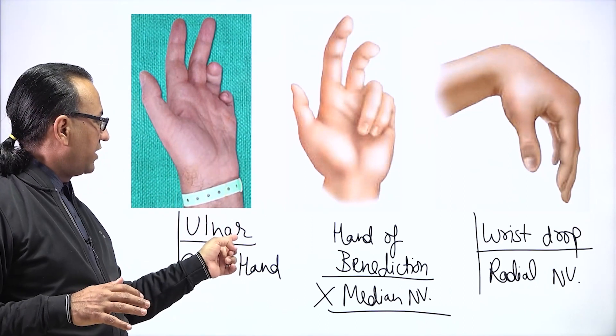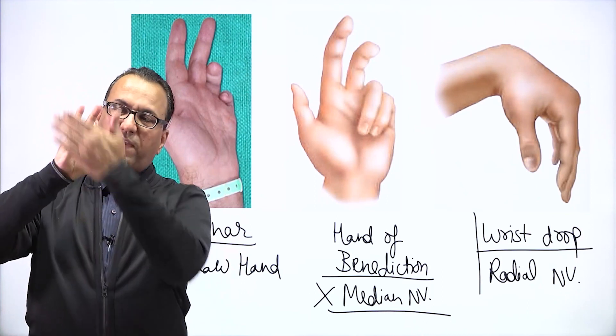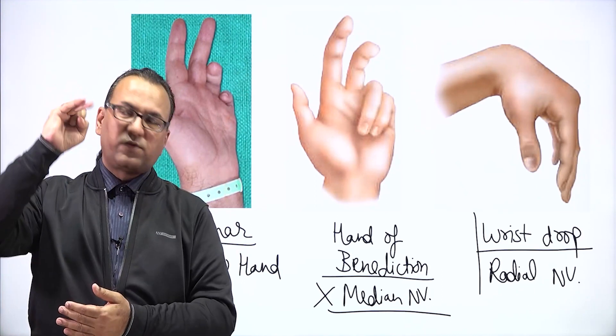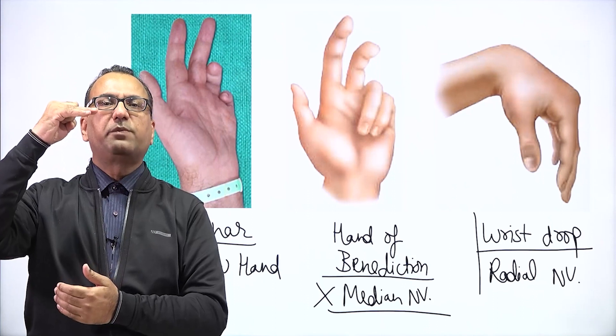Because when there is ulnar nerve injury, we understand that lumbricals to these fingers have been compromised. That is why the flexion at MCP and extension at IP is a problem.